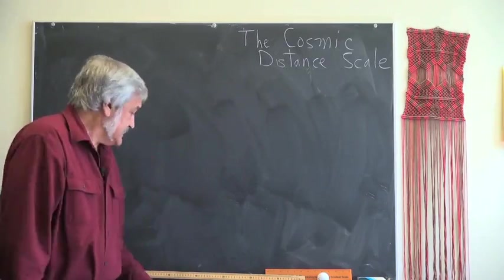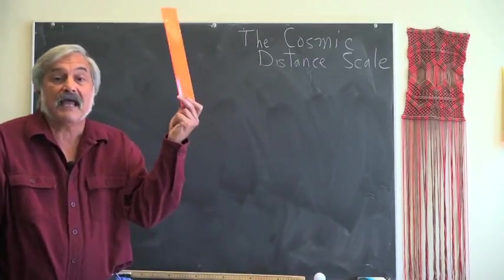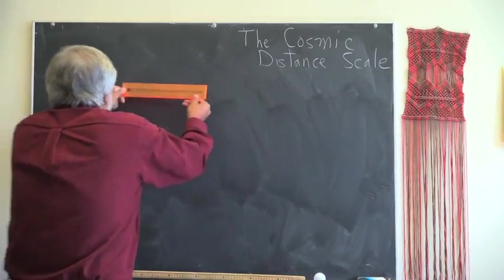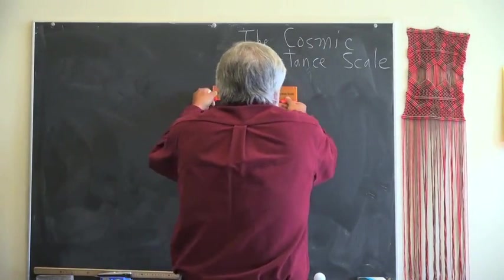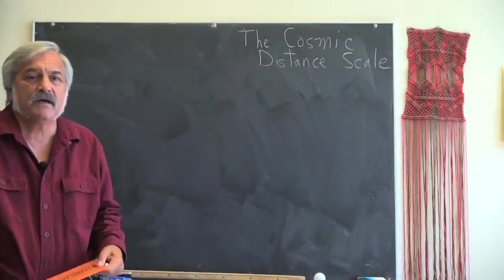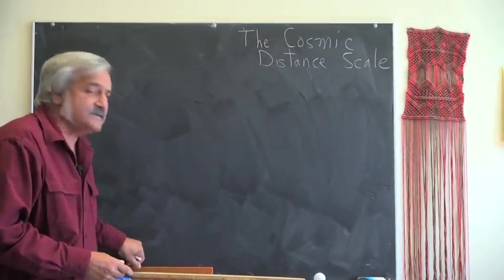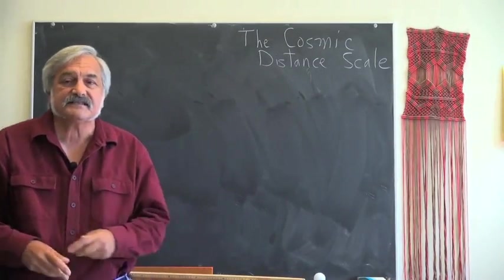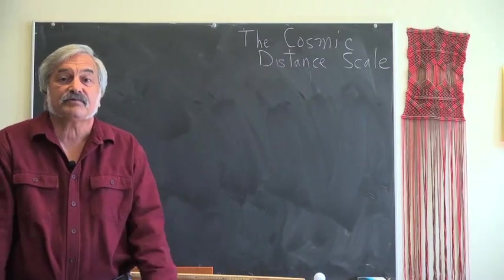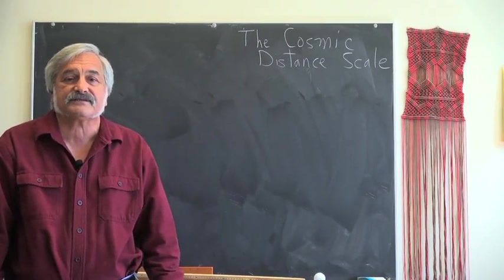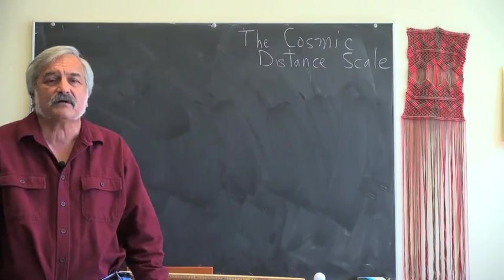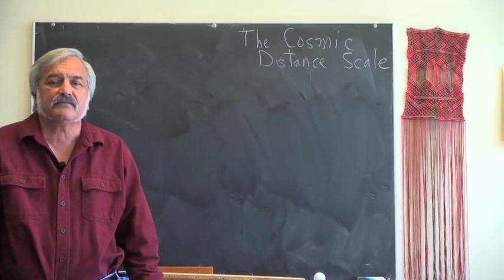Easy, right? You just take a ruler and see how far it is to somewhere else. One ruler length, two ruler lengths, three ruler lengths, four ruler lengths, and so on and so forth. But what about if you can't even get to the other place? Or if the distances are so vast that ordinary rulers are impractical? Such are the problems we have when we try to measure the distances to the stars. We need some sort of stellar bootstrap in order to extrapolate our earthly distance measurements into the realm of the cosmos.